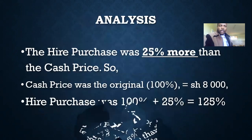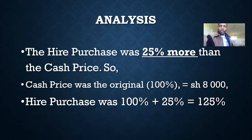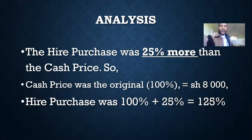When we analyze that question, we are told that the hire purchase was 25% more than the cash price. The cash price was the original price, which is 100%, and we are given that as 8,000 shillings. The hire purchase, which was 25% more, will be 100% plus 25%, which is 125%. So the cash price is 100% and the hire purchase price is 125%.